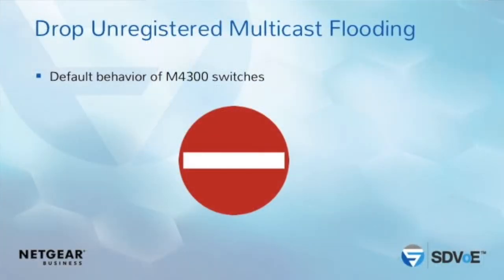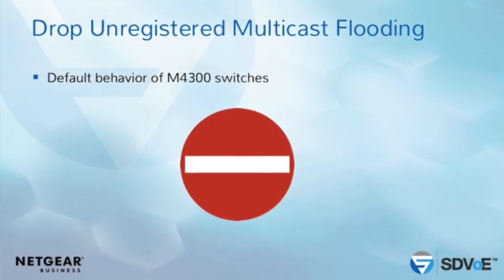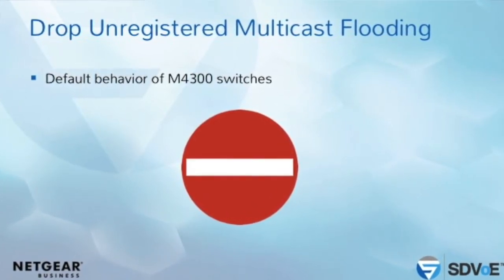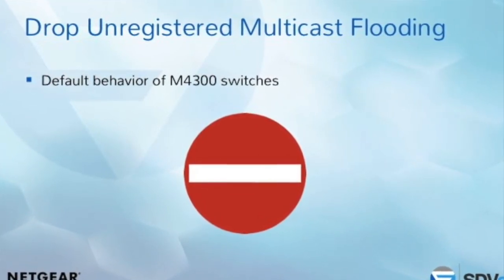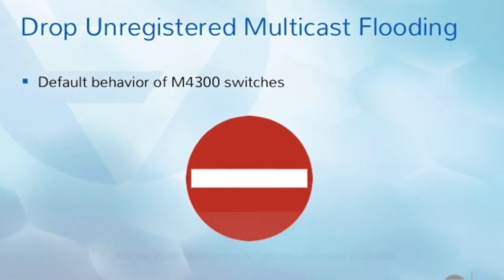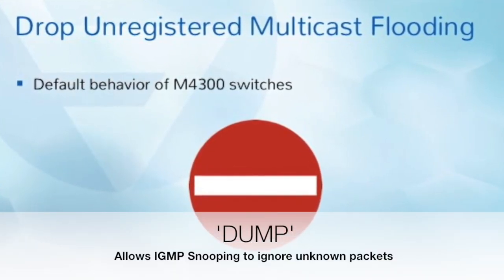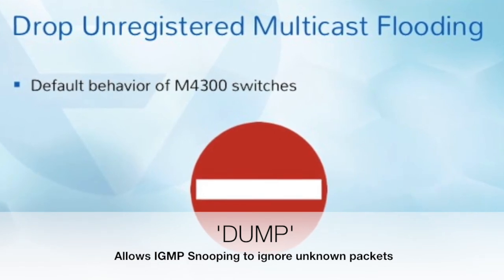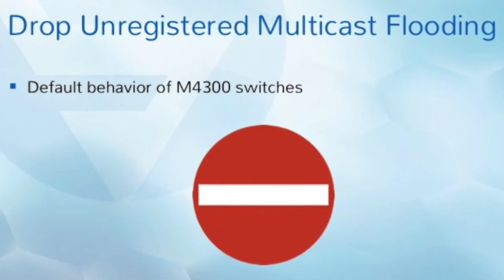After these three things, there is something not mandatory but good to have: your switch backend should block unknown multicast packets. You don't want to be messed up with somebody else's video. This feature is called 'drop unregistered multicast flooding' — the IGMP snooping will simply ignore unknown multicast completely. Fortunately, for Netgear switches, this is often the default behavior.